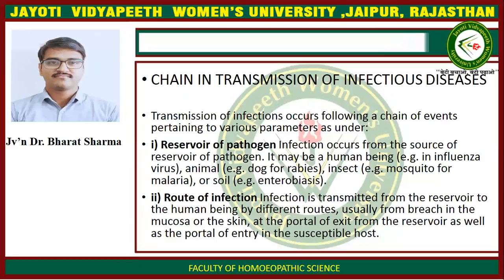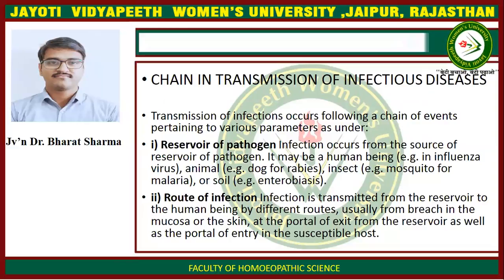Chain of transmission of infectious disease. Transmission of infections occurs following a chain of events pertaining to various parameters. First is the reservoir of pathogens — infections occur from the source or reservoir of pathogens. It may be a human, such as influenza virus; an animal, such as dogs for rabies; insects, such as mosquitoes for malaria; or soil, such as in enterobiasis. Second, route of infection — infection is transmitted from the reservoir to the human being by different routes, usually from a breach in the mucosal or skin barrier, at the portal of exit from the reservoir as well as the portal of entry in the susceptible host.